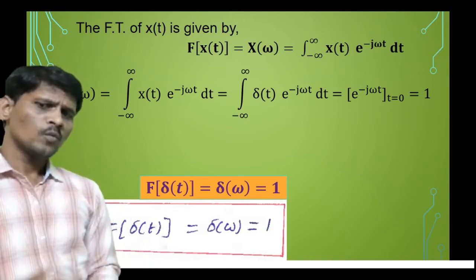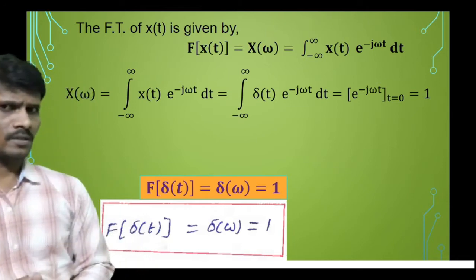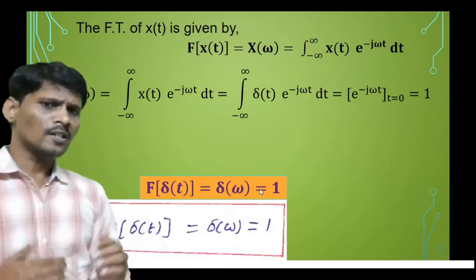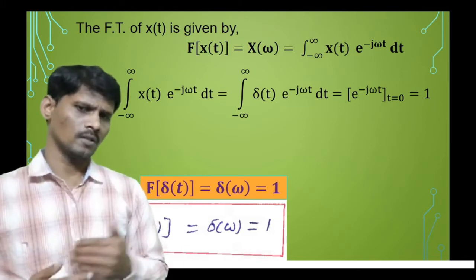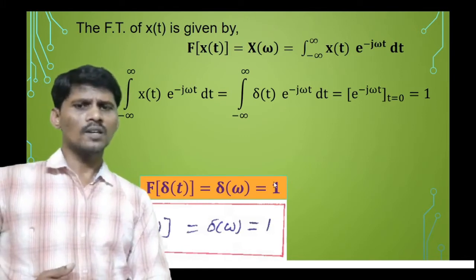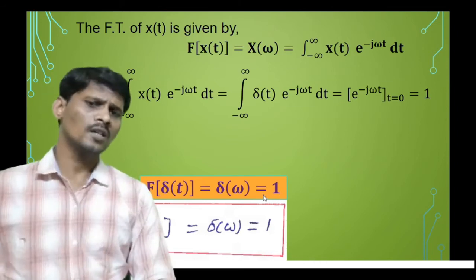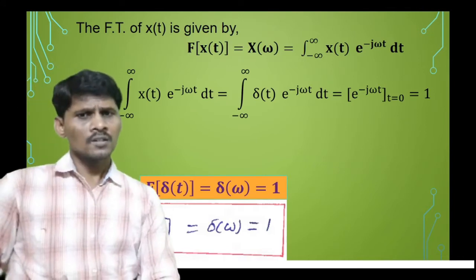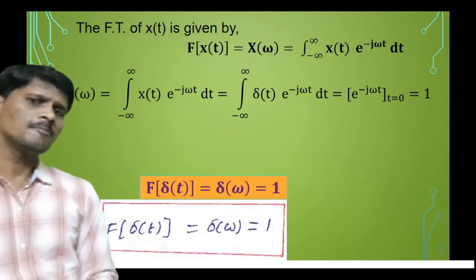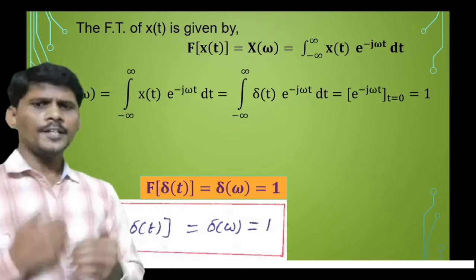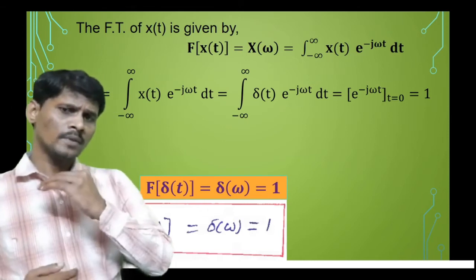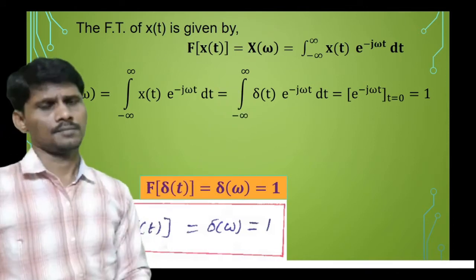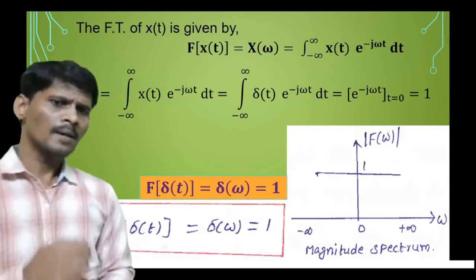The Fourier transform of the unit impulse function is independent of frequency. Substituting different values of ω — which varies from minus infinity to plus infinity — into this equation, the Fourier transform remains constant. For ω from minus infinity to plus infinity, it has a constant value of 1. This is the magnitude spectrum of the unit impulse function.